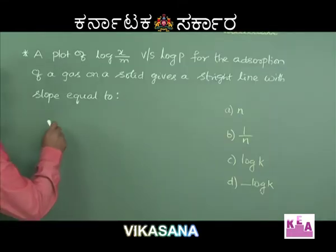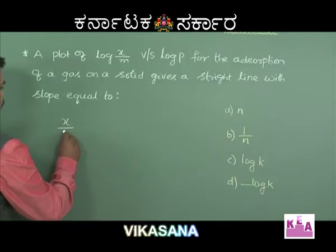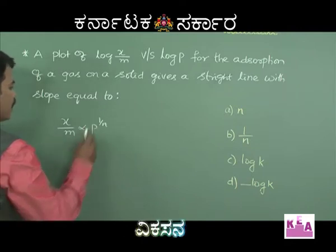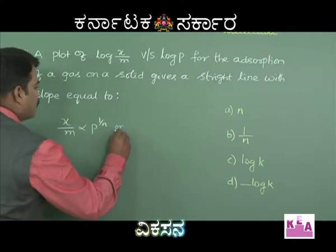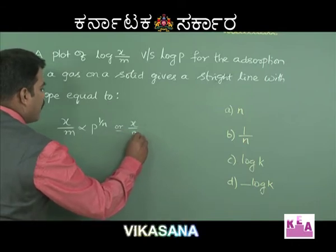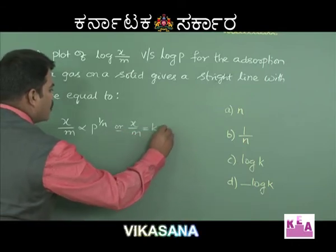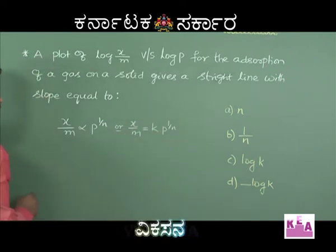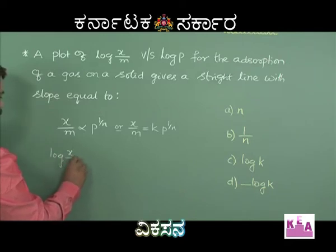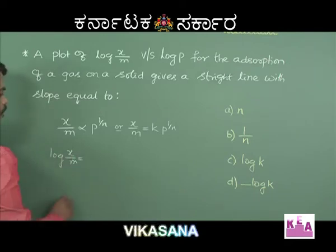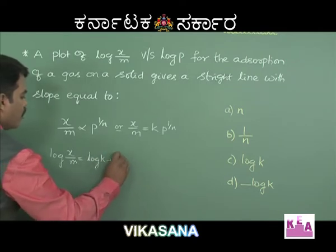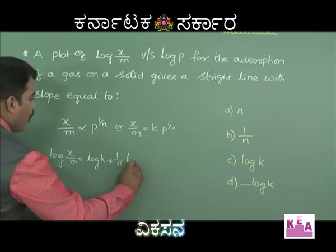For an intermediate pressure, x by m is proportional to p to the power of 1 over n, or I can write this as x by m is equal to k into p to the power of 1 over n. On taking log on both sides, I am going to get: log(x/m) = log k + (1/n) log p.